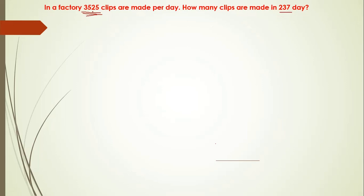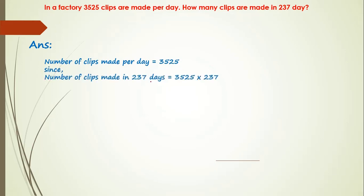For that, we need to multiply this number with the number of days to get the number of clips produced in a factory. Number of clips made per day, 3525. Since, number of clips made in 237 days equals to 3525 into 237.